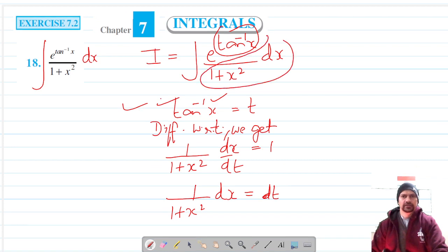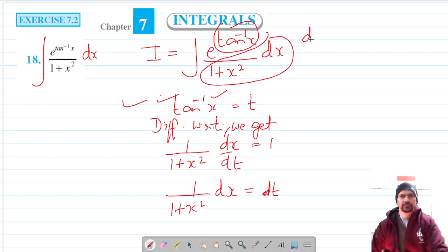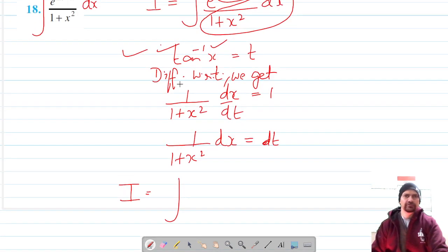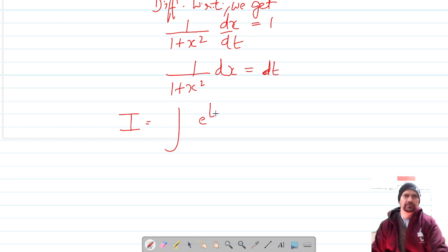And now this dx upon 1 plus x squared becomes dt. This becomes t. And our integral in terms of t will be e raised power t into dt.